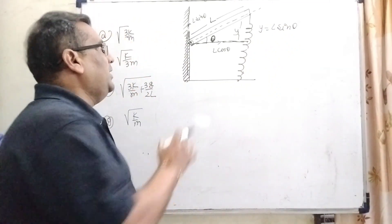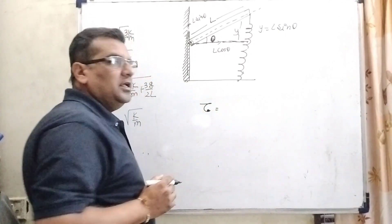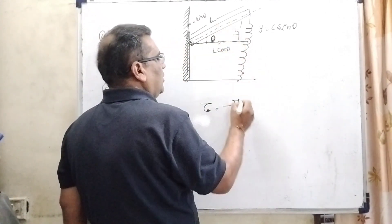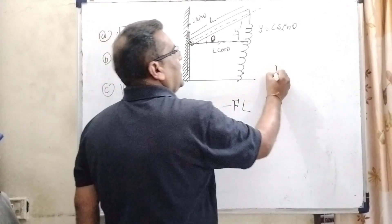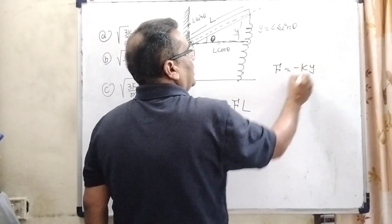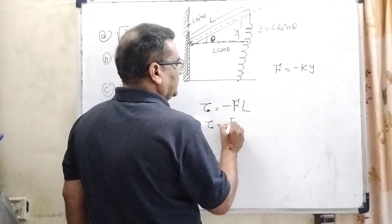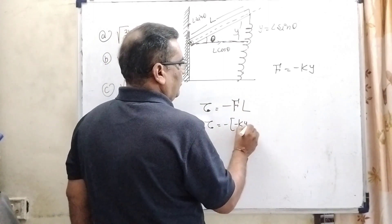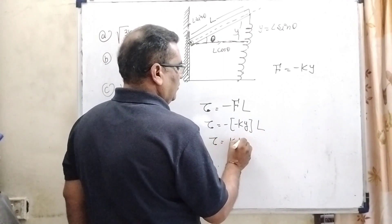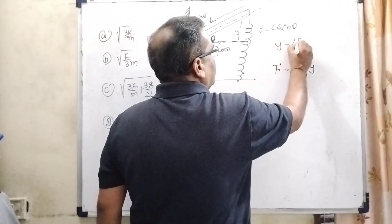Now, torque is applied on the rod — tau equals the restoring force acting against displacement. Therefore, tau equals minus F times L, the total length of the rod. Here F is the force applied on the spring, that is F equals minus k times y. Substituting this value in place of F: tau equals minus(minus ky) times L.